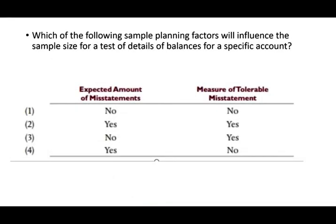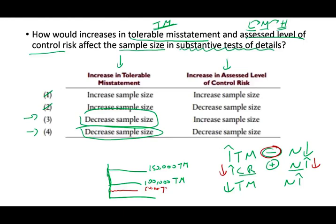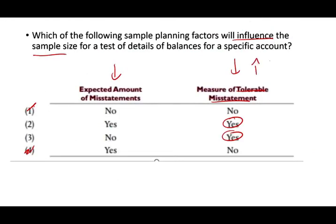Let's take a look at the next question: which of the following sample planning factors will influence the sample size for a test of detail balance for a specific account? The options are: expected amount of misstatements, and the measure of tolerable misstatement. The measure of tolerable misstatement does affect sample size — there is a negative relationship. If tolerable misstatement goes up, sample size goes down. If tolerable misstatement goes down, sample size goes up. If you can tolerate more, you need less sample size.